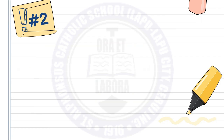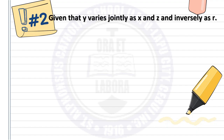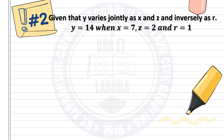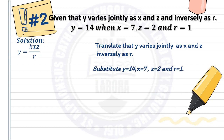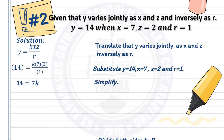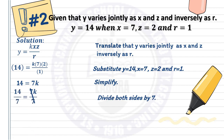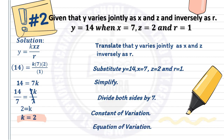Number two: given that y varies jointly as x and z and inversely as r, and y is 14 when x is 7, z is 2, and r is 1. Translating gives y equals kxz over r. Substituting: 14 equals k times 7 times 2 over 1, so 14 equals 14k. Dividing both sides by 7 gives k equals 2. The constant of variation is 2, and the equation of variation is y equals 2xz over r.